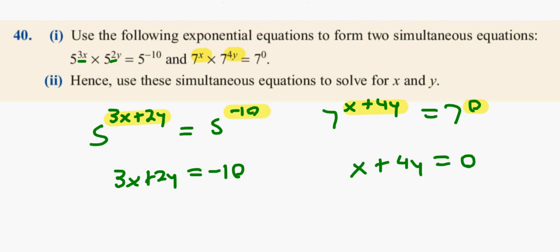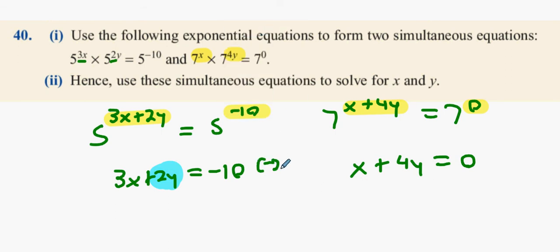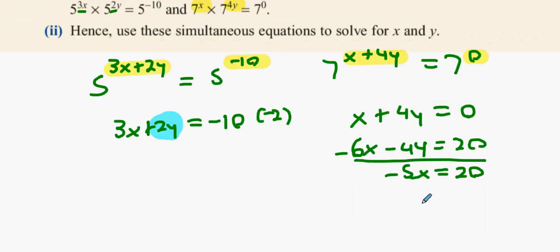Now I'm gonna get rid of the y's. What can I do with this one here? Yeah, times that one by minus 2, and we'll get minus 6x minus 4y equals minus 10 by minus 2, which is 20. Minus 5x equals 20, so x will equal minus 4. It does equal minus 4, but just to be safe I'll multiply both sides by minus and then divide it.